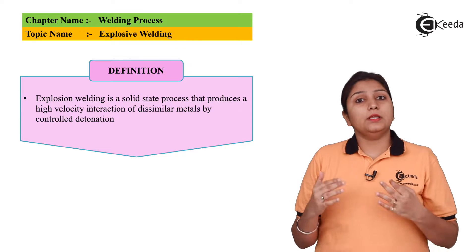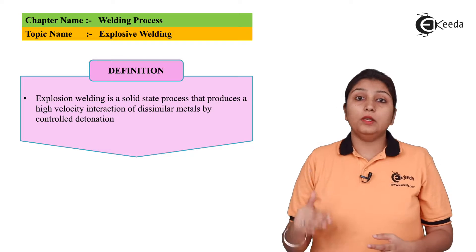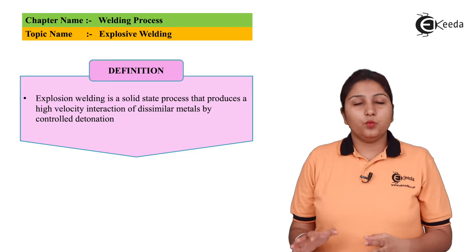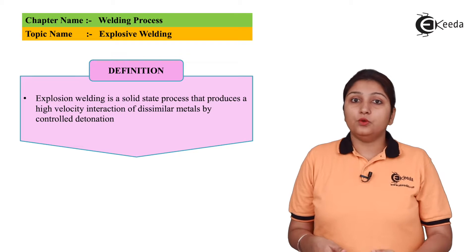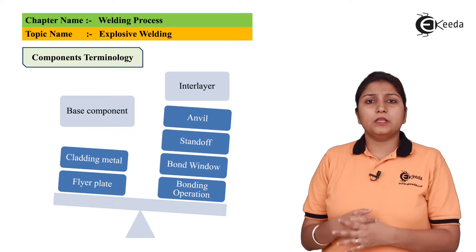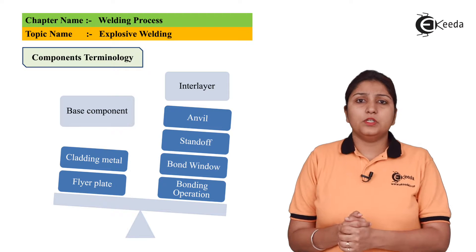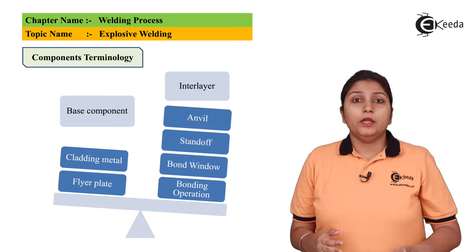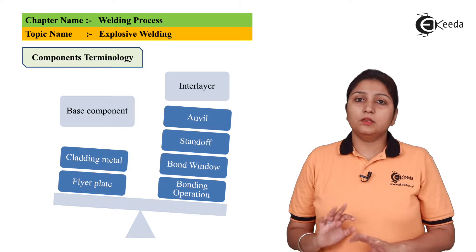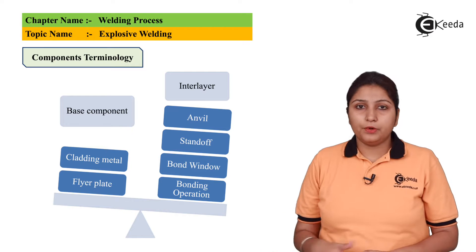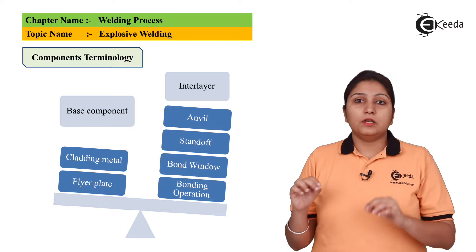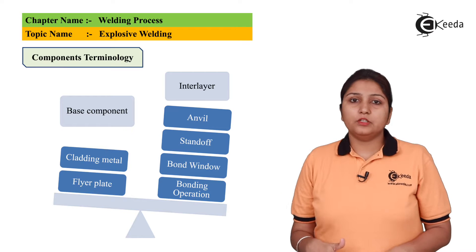So what is explosive welding? It is a solid state welding process in which explosion takes place due to detonation action. These are some basic components which are used. It can also weld dissimilar plates as well as similar plates. There would be a base component with some cladders and with some additional explosive arrangement.